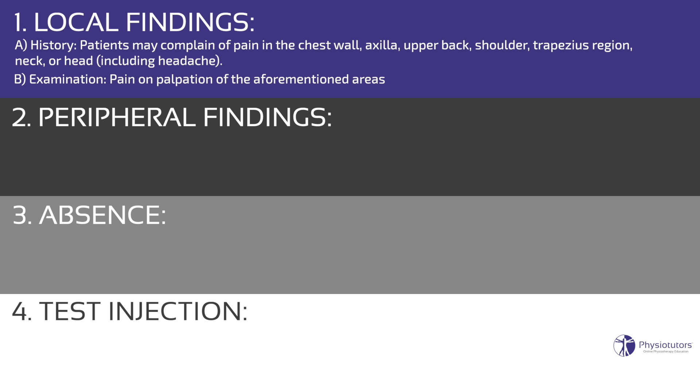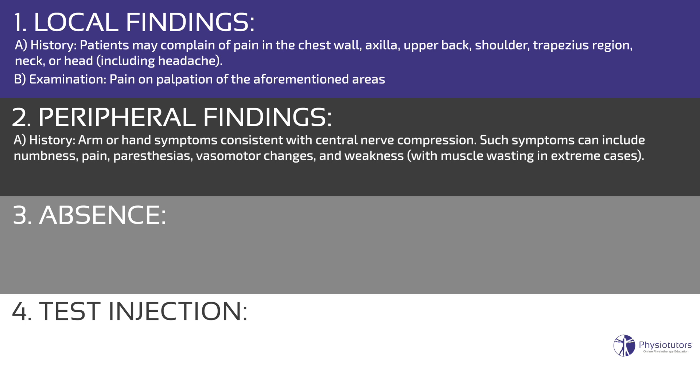Criterion 2: Peripheral findings. a. History — arm or hand symptoms consistent with central nerve compression. Such symptoms can include numbness, pain, paresthesias, vasomotor changes, and weakness with muscle wasting in extreme cases. These peripheral symptoms are often exacerbated by maneuvers that either narrow the thoracic outlet, for example lifting the arms overhead, or stretch the brachial plexus, for example dangling, driving, or walking and running.